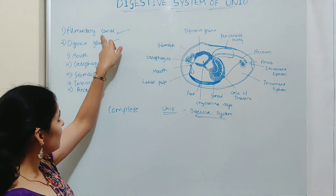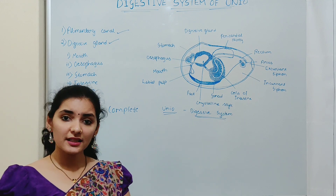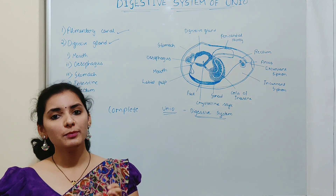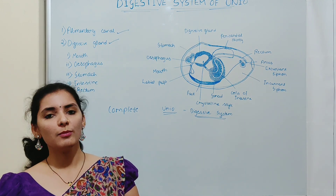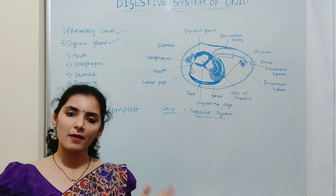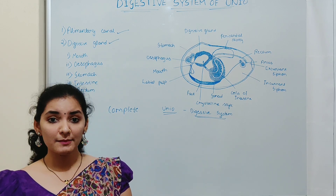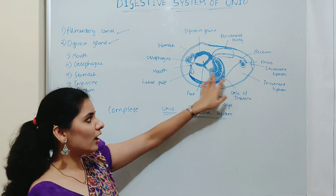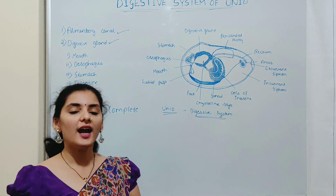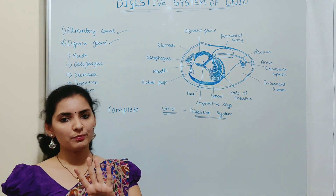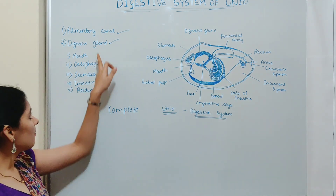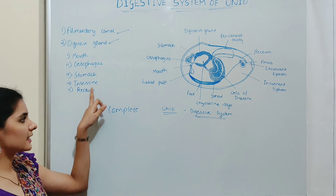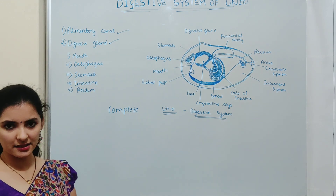The alimentary canal is a tubular structure along which food passes through the body from mouth to anus. The alimentary canal in the case of Unio is a highly coiled structure and consists of mainly five parts: mouth, esophagus, stomach, intestine, and rectum.